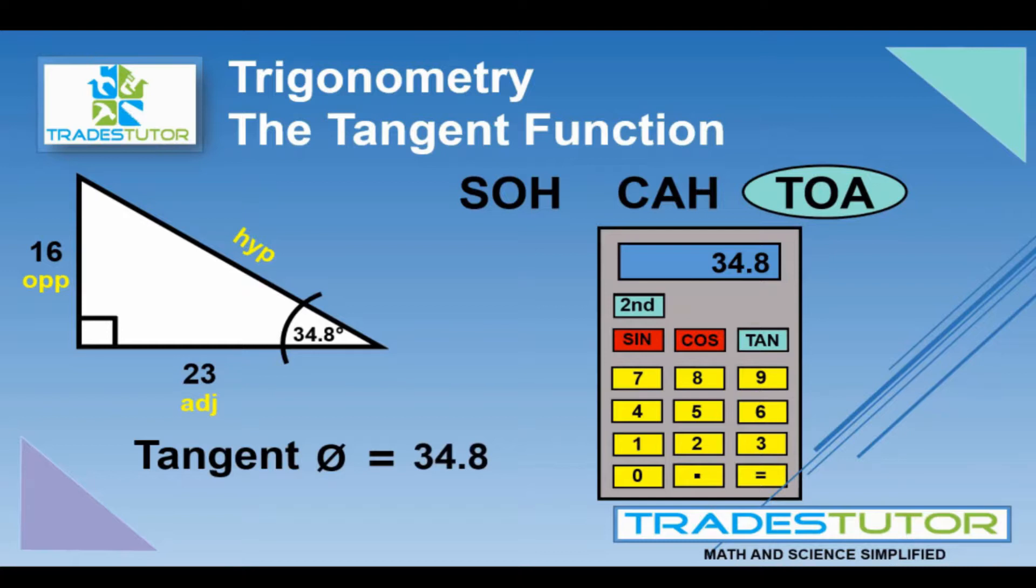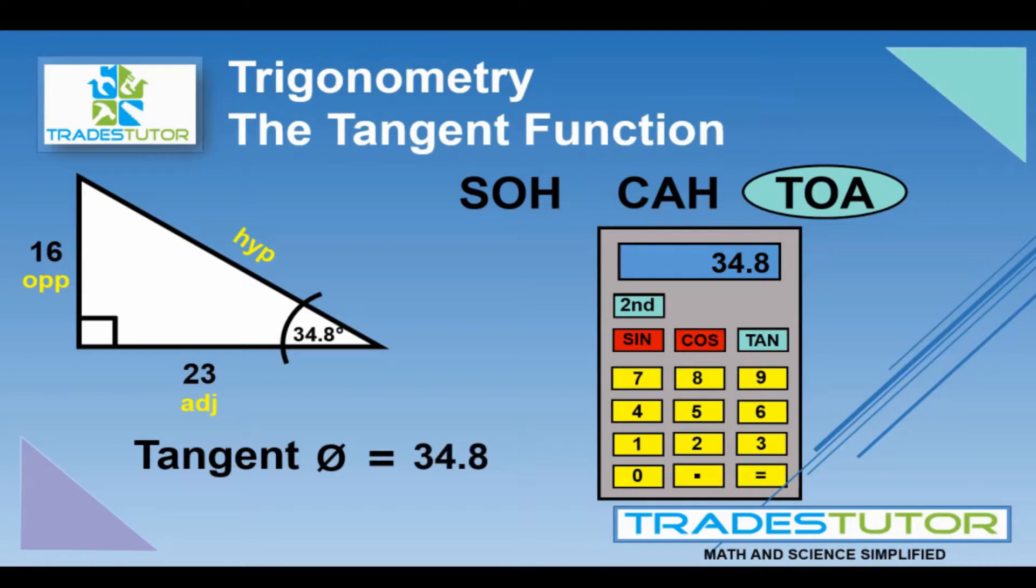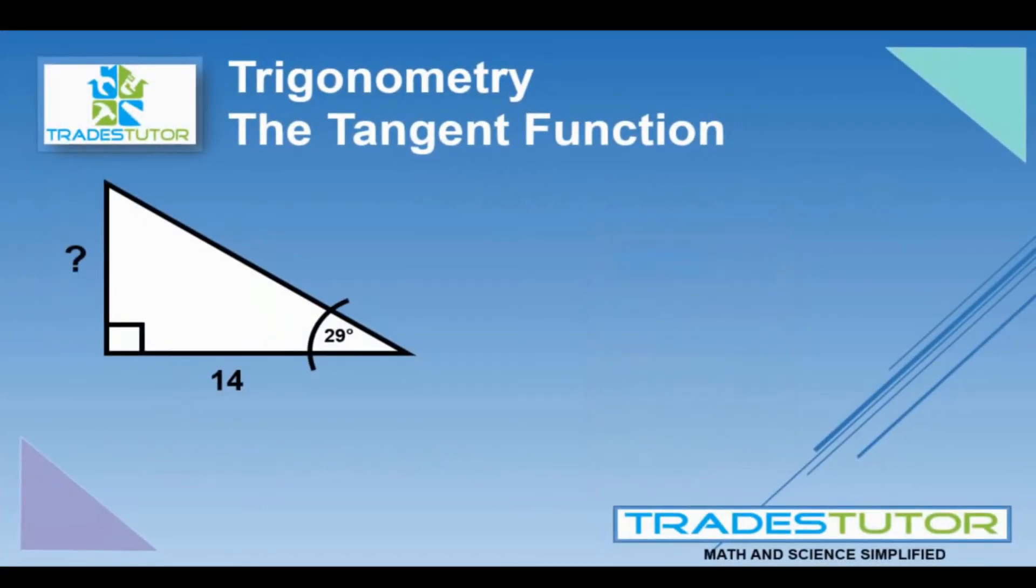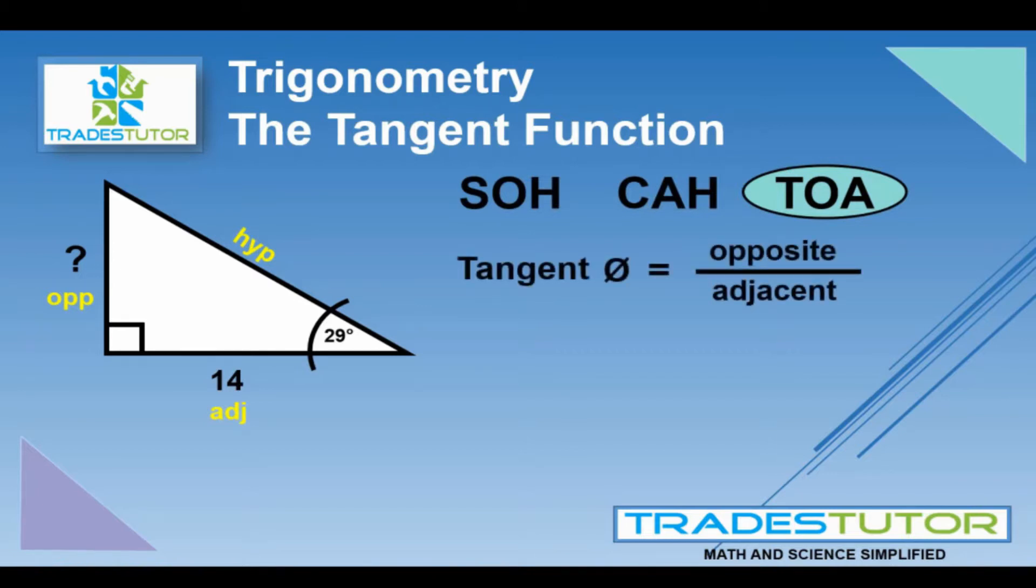Let's try another example. This one's a little different, because we know the angle of 29, and now what we're trying to find, we're trying to find the opposite. So, once again, using the tangent function, there you go. But now we have to solve for the opposite. So, we have to rearrange that formula to get that.